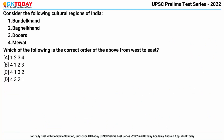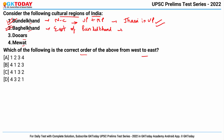Question number three: consider the following cultural regions of India — Bundelkhand, Baghelkhand, Duars, Mewat. Arrange them in the correct order from west to east. Bundelkhand is a hilly region in north-central India stretching across Uttar Pradesh and Madhya Pradesh; Jhansi in UP is its largest city. Baghelkhand is located to the east of Bundelkhand, also stretching across parts of Madhya Pradesh and Uttar Pradesh; Satna is located in this region.